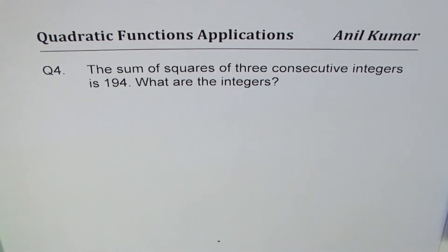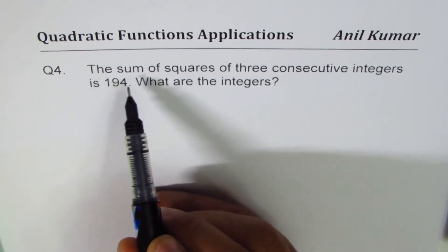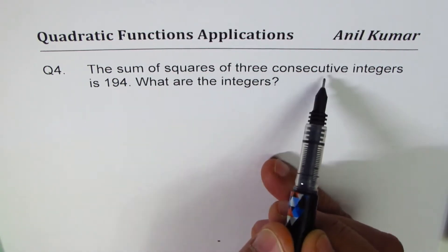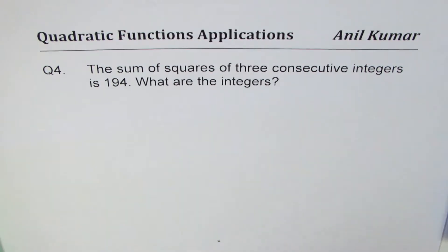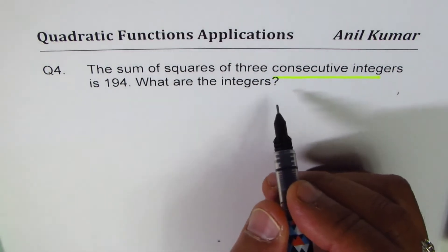I'm Anil Kumar sharing with you test questions on applications of quadratic functions. Question number four: the sum of squares of three consecutive integers is 194. What are the integers? You can always pause the video, answer the question, and then look into my suggestion. Let's read the question once again: the sum of squares of three consecutive integers is 194. Consecutive integers are numbers which come together — for example, 2, 3, 4.